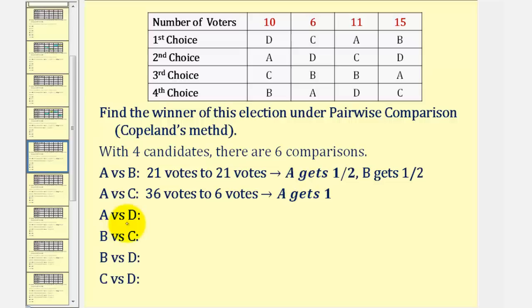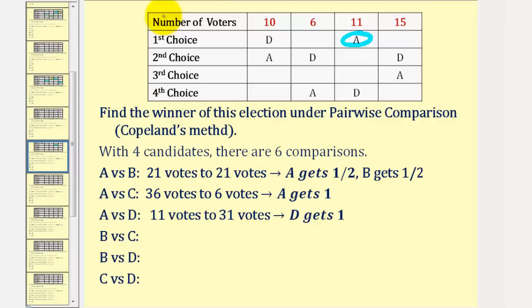For A versus D, we'll remove B and C from the table. Notice A is preferred here, so A gets eleven votes. But D receives ten plus six plus fifteen, or thirty-one votes. So D wins and D receives one point.